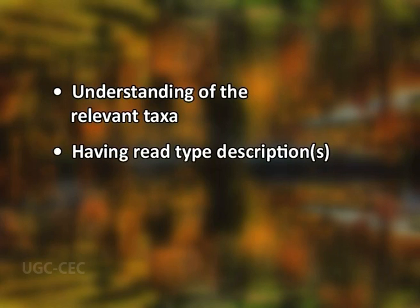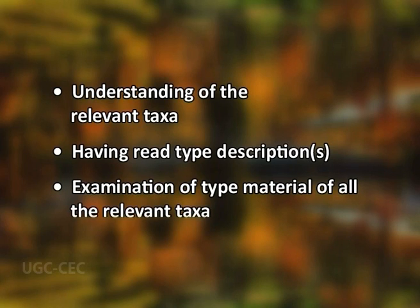Now we come to type method. When identifying material, a taxonomist attempts to apply a taxon name to a specimen or a group of specimens based on his or her understanding of the relevant taxa, having read the type descriptions and examination of all the type materials of that relevant taxa. If there are more than one named type specimens that all appear to be the same taxon, then the oldest name takes precedence and is considered to be the correct name for the material in hand. If on the other hand the taxon appears never to have been named at all, then the scientist or another qualified expert picks a type specimen and publishes a new name and an official description.